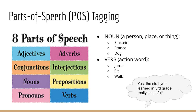At the very least, I hope you know what a noun and verb are since they usually teach this in grade school. A noun is a person, place, or thing — for example, Einstein is a noun. A verb is an action word — for example, jump, sit, and walk are verbs.